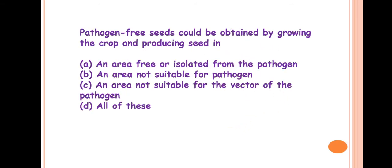Next question is: pathogen-free seeds could be obtained by growing the crop and producing seeds in? So the answer is all of these. These are the conditions for growing pathogen-free seeds. The area must be free or isolated from the pathogen, that may be airborne or soil-borne pathogen. Then the area must not be suitable for pathogen growth, meaning the environmental conditions must not be suitable for the growth of the pathogen. Next is an area not suitable for the vector. Generally for vector transmitted diseases like viruses, and also fungi and bacteria, the virus multiplication must not be suitable in that area.